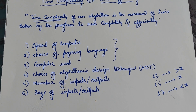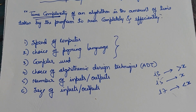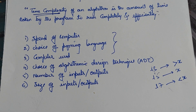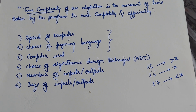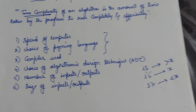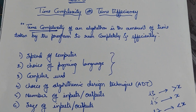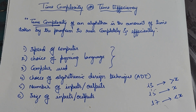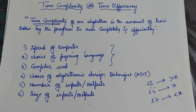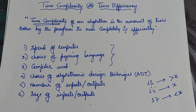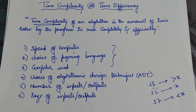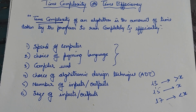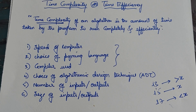Don't get confused about ADT. In data structures ADT stands for abstract data type, but here in design and analysis of algorithms, ADT stands for algorithmic design technique — what type of technique we use to solve the problem. There are totally different types of algorithm design techniques: brute force, divide and conquer, decrease and conquer, transform and conquer, dynamic programming, input enhancement, space and time tradeoff, backtracking, branch and bound, and greedy technique. There are 10 different algorithm design techniques, and we need very good knowledge of which one to use for what type of problem.